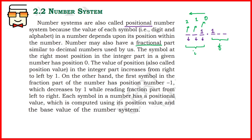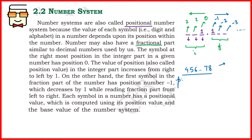These positions are important because they help you calculate the value of the entire number in different number systems. For the fractional part — the right-hand side of the decimal — positions are defined in terms of negative numbers, and the position decreases as we move from left to right: minus 1, minus 2, minus 3, and so on. For example, if we have the number 456.78, the positions just to the left of the decimal are 0, 1, and 2, and just to the right are minus 1 and minus 2.